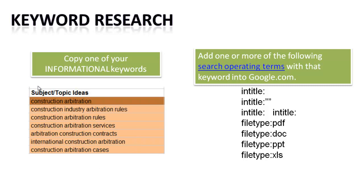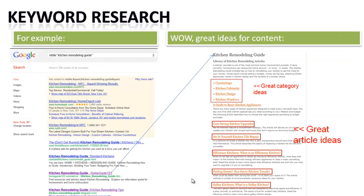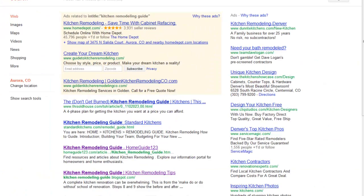What we're going to do is take those keywords and copy and paste them into Google, but we're going to add a search operator term. If you don't know what a search operator term is, please click on this tutorial and you'll find a whole tutorial on that. In short, it's going to help us narrow down the search results so we find just what we're looking for and not a whole bunch of random information.